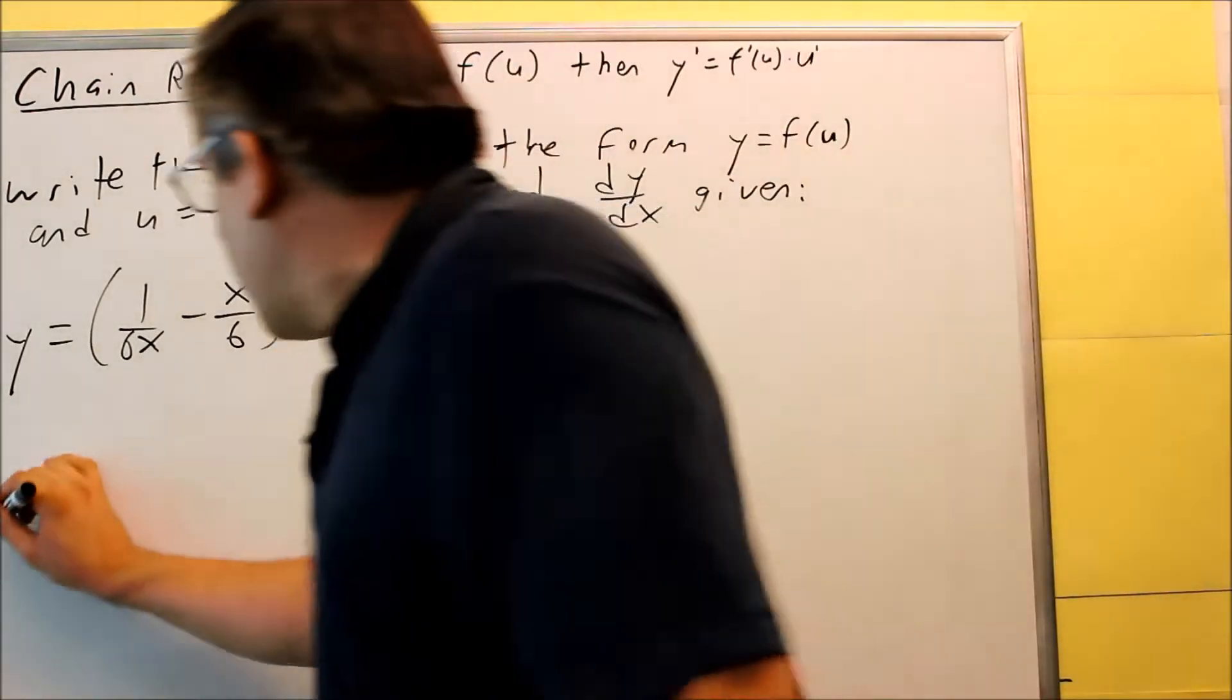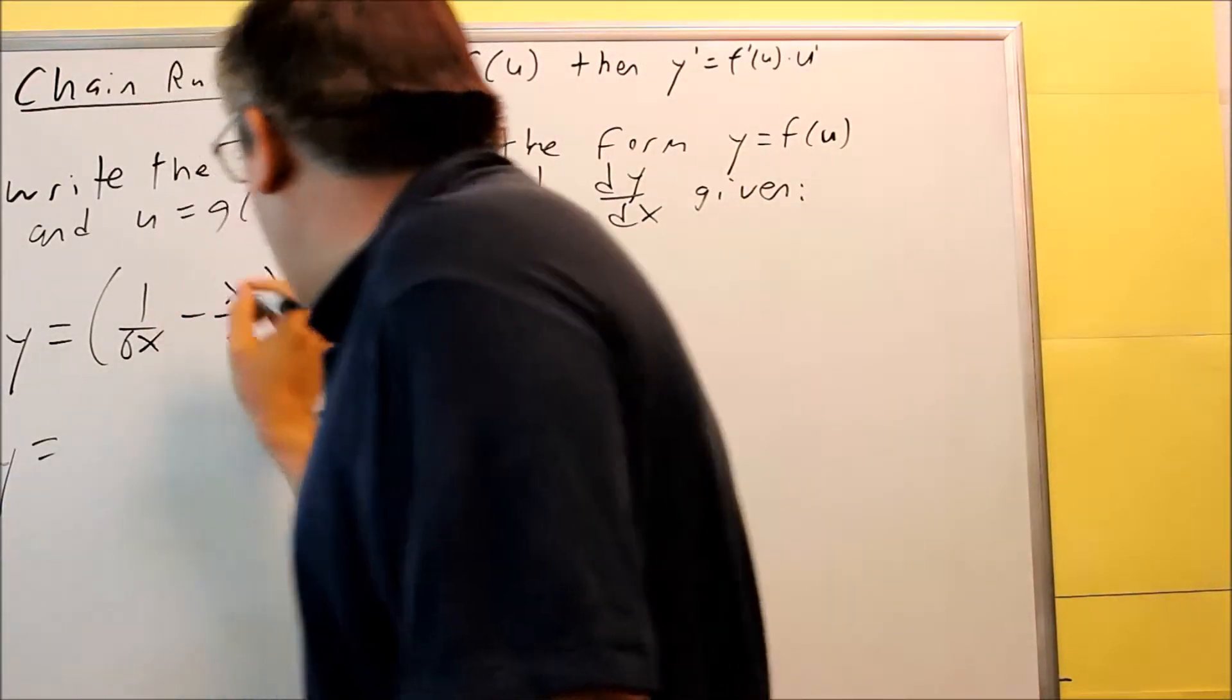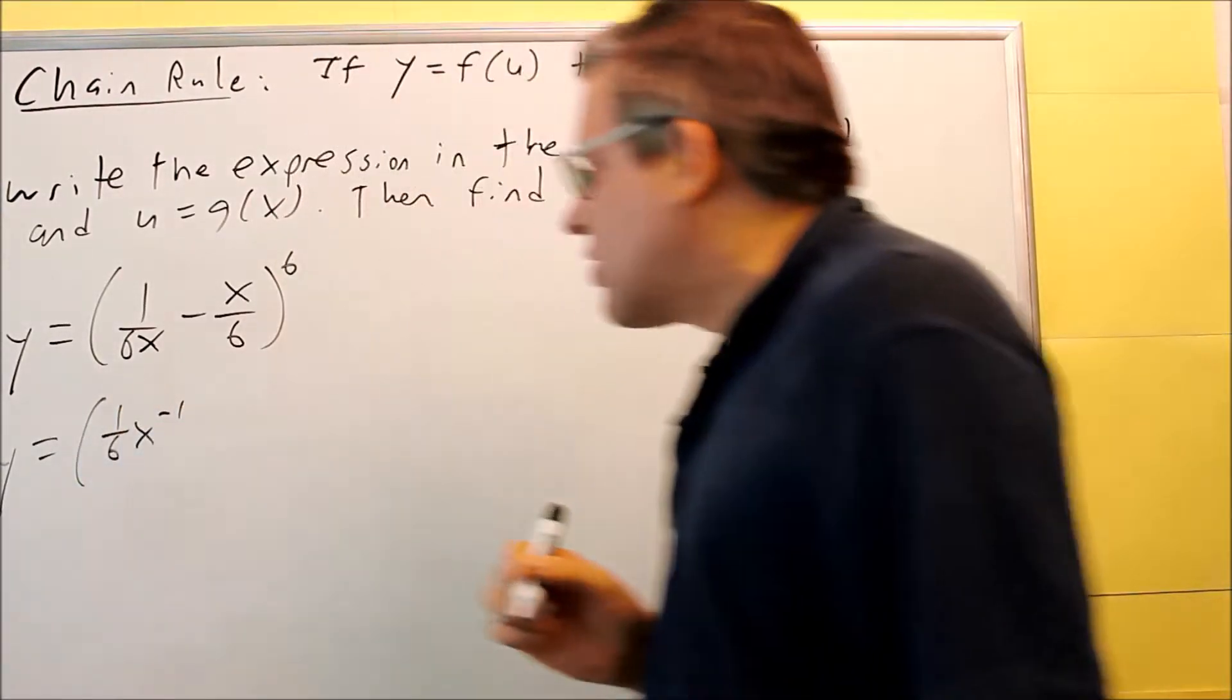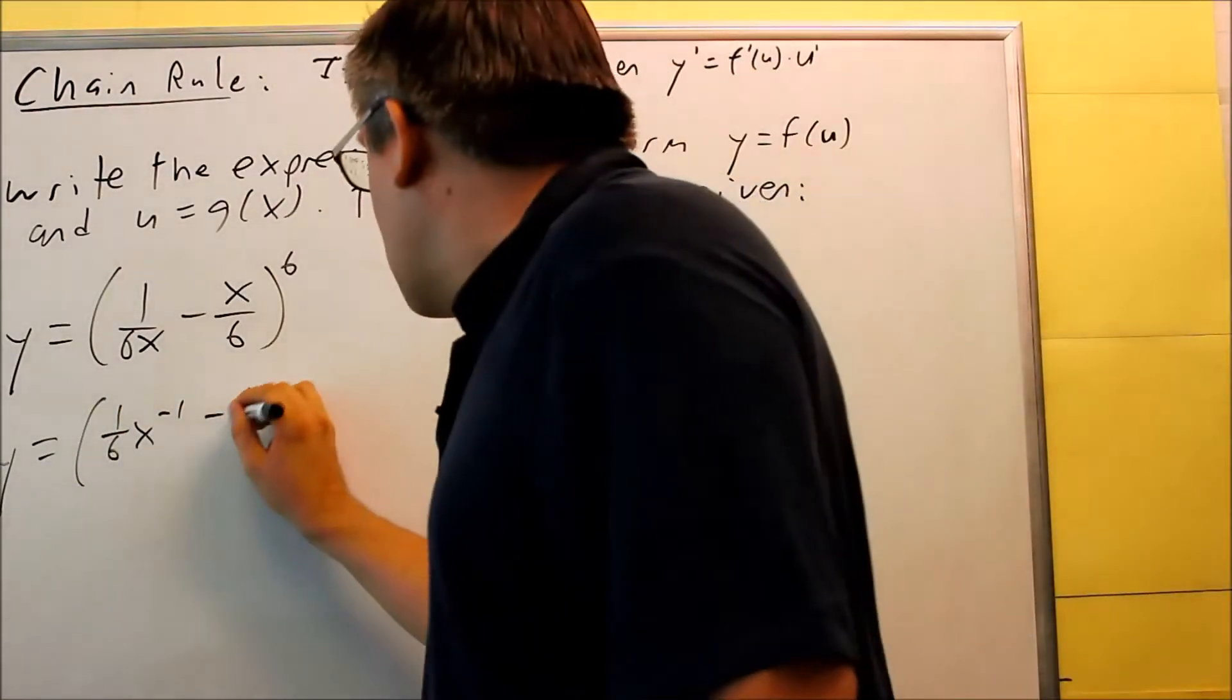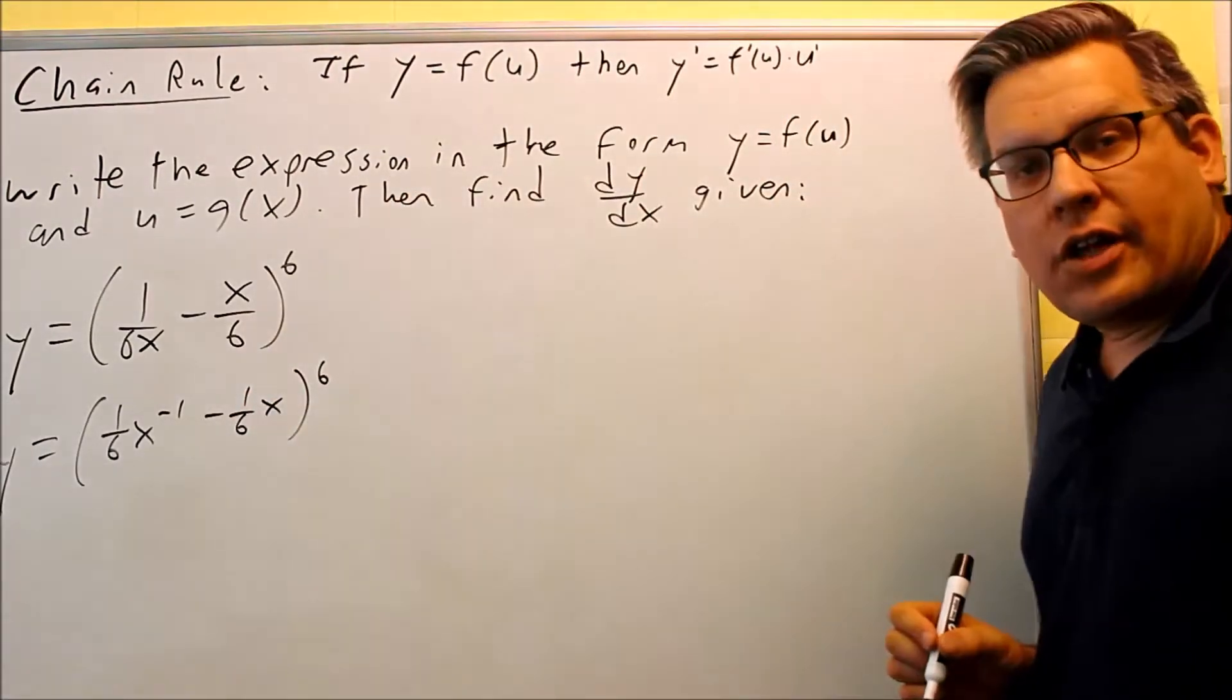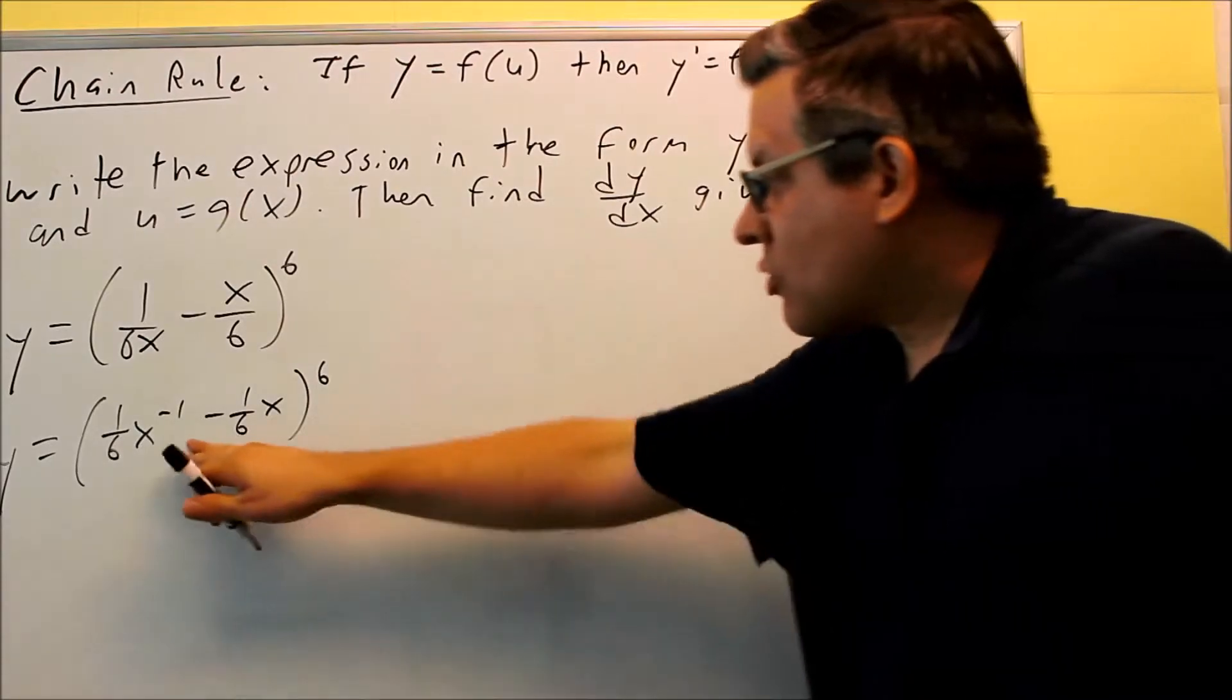So instead, let's rewrite it, writing it this way with negative exponents. I'm going to do 1 over 6x to negative 1, and this is minus 1 over 6x, and then I have a 6 on the outside. So I'm going to write it this way instead.